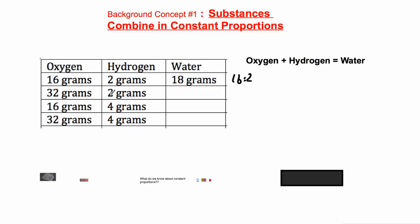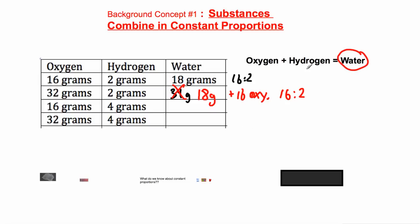But what happens if you react 32 grams of oxygen and 2 grams of hydrogen? Many scientists thought you'd get 34 grams of water. But when you do this experiment, that's not what you get. What you get is 18 grams of water plus 16 grams of oxygen left over — because you're still reacting 16 grams of oxygen with 2 grams of hydrogen in that 16 to 2 ratio. So it was looking like, when you make new substances, the components can't be put together in just any old proportion, but in a constant proportion. In the case of water, 16 to 2.